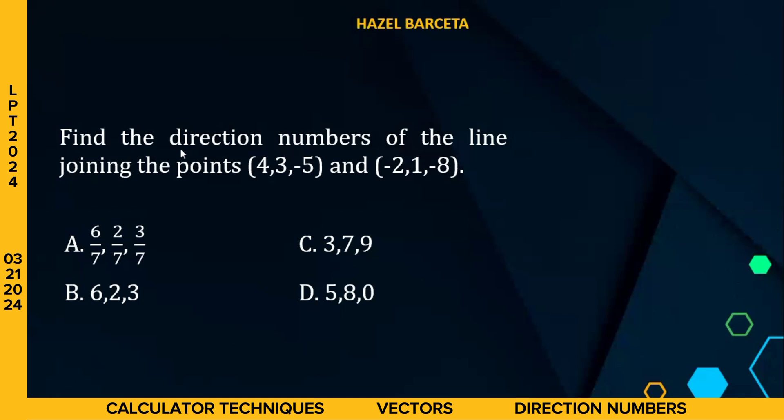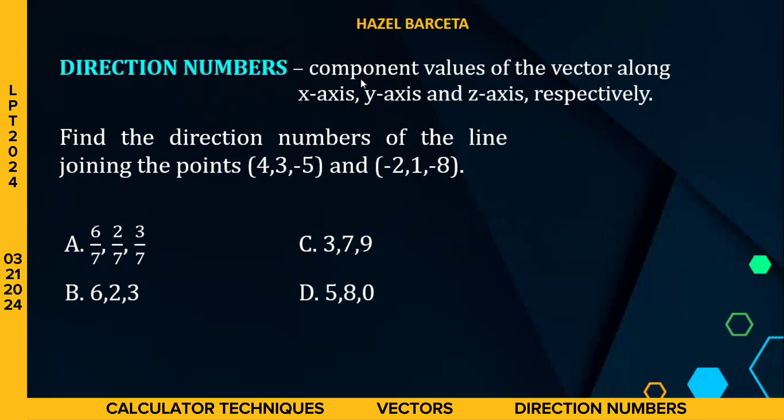Direction numbers are component values of the vector along x-axis, y-axis, and z-axis respectively. In short, x-component, y-component, and z-component.